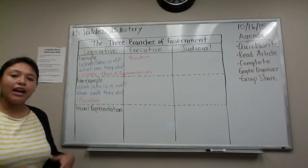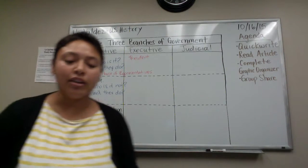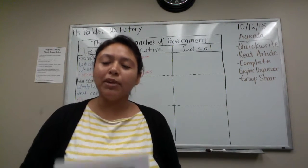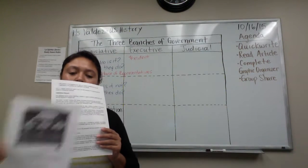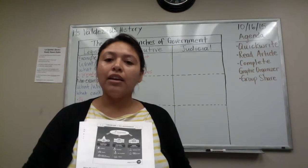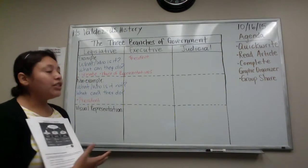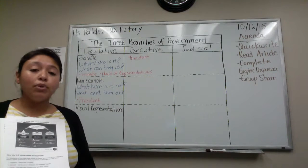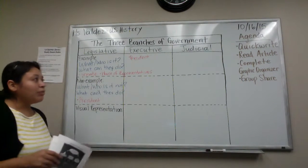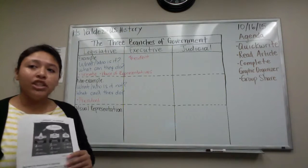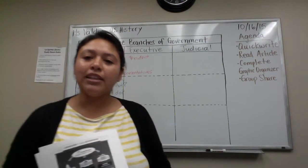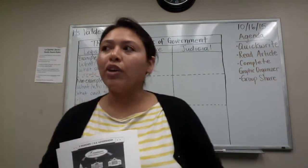Now that we have a little background on what we are writing about the three branches of government, I want you to take about 20 minutes to read through the article. It's three pages. Go through the article individually and complete the graphic organizer as best as you can. You can either do bullet points or complete sentences — it's up to you. When we are done, we will be sharing with each other with our partners. So take about 20 minutes, and if you have any questions just let me know and I'll look around.